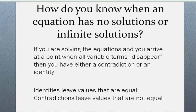So how do you know when an equation has no solutions or infinite solutions? What happens in your work is that if you're solving the equations and you arrive at a point when all variable terms disappear on both sides of the equal sign, then you either have a contradiction or an identity. Identities leave values that are equal. Contradictions leave values that are not equal.